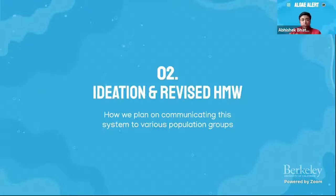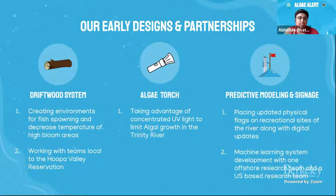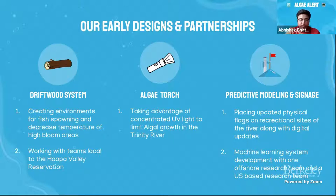Our initial plan took two straightforward pathways: mitigate and educate, just as we do for many environmental problems. After the first half of the semester, we designed three branches of solutions. We contacted groups local to the Hupa Valley Reservation, such as Humboldt University, to start a driftwood project to create cooler environments for recreation and fish spawning. We also began designs for a UV light system to kill bacterial blooms. Finally, we coordinated with an offshore team and a local U.S. team to create a machine learning predictive model to assess the safety of recreational waters over the course of the year.